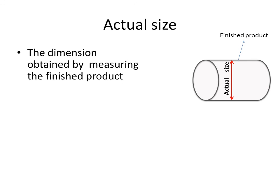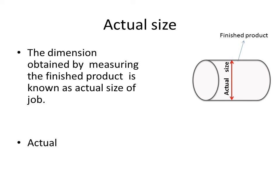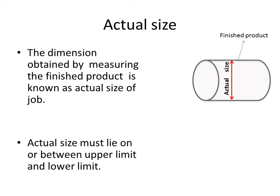Actual size: once the finished product is ready, the dimension obtained by measuring the finished product is known as the actual size of the job. The actual size must lie on or between the upper limit and lower limit. As shown in the figure, the finished product is between the upper and lower limits, but it may also lie exactly on either limit.